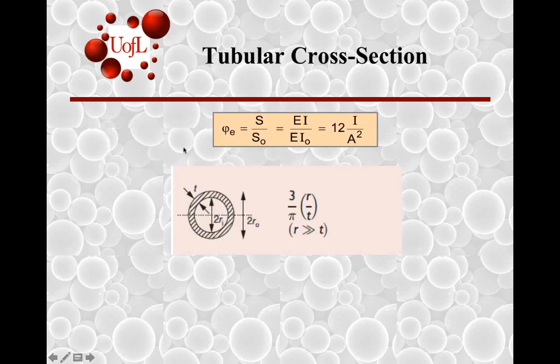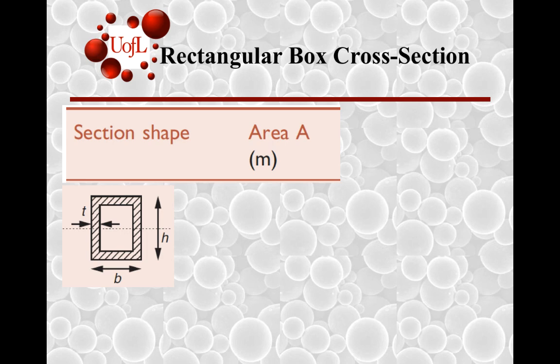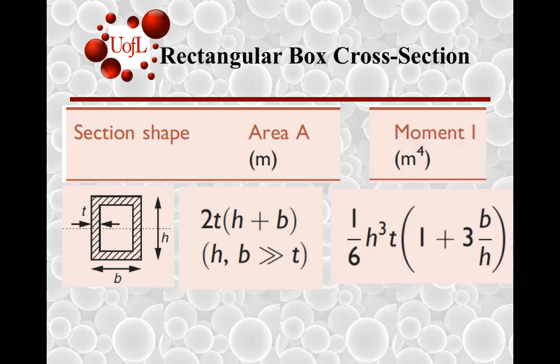The circular cross-section was just 3/π. For a tubular cross-section to a rectangular box cross-section, we've seen the solid rectangular cross-section before, so what about a hollow rectangle? In a similar manner, the area can be determined by snipping this across—you have t times 2b plus 2h, so the area becomes 2t times (h + b), provided that the sides of the rectangle are way higher than the thickness of this cross-section.